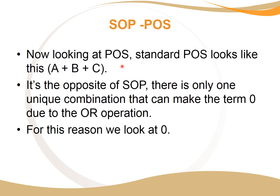Wherever we have a zero, we have POS. When we look at POS, it's the opposite of SOP — for SOP we looked at ones, here we look at zeros. There's only one unique combination that would make a POS term zero. Because it's an OR operator, anything OR-ed with a one is one, regardless of the other variables. So there's no unique combination in terms of ones, but there is a unique combination in terms of zero.